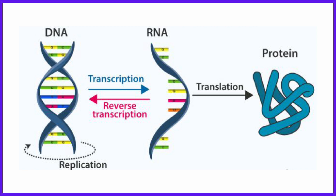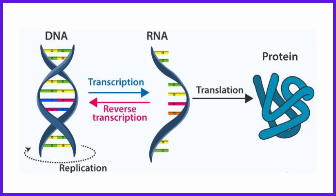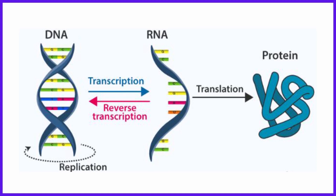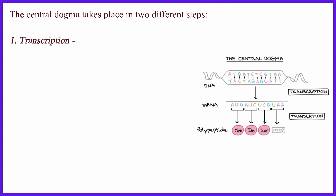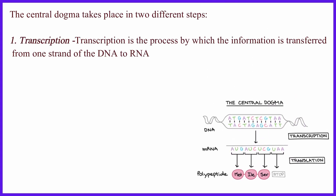It is suggested that the information present in DNA is essential to make up all proteins, and RNA acts as a messenger that carries information through the ribosomes. The central dogma takes place in two different steps.